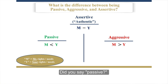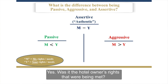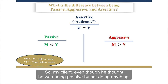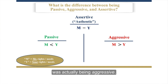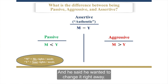How many of you said passive? Actually, he wasn't — and here's why. Whose rights were being met? That's the key. Was it his rights that were being met? Yes. Was it the hotel owner's rights that were being met? No. The hotel owner was not having his rights met. So my client, even though he thought he was being passive by not doing anything, was actually being aggressive. When he realized this, he was horrified — absolutely horrified. And he said he wanted to change it right away.